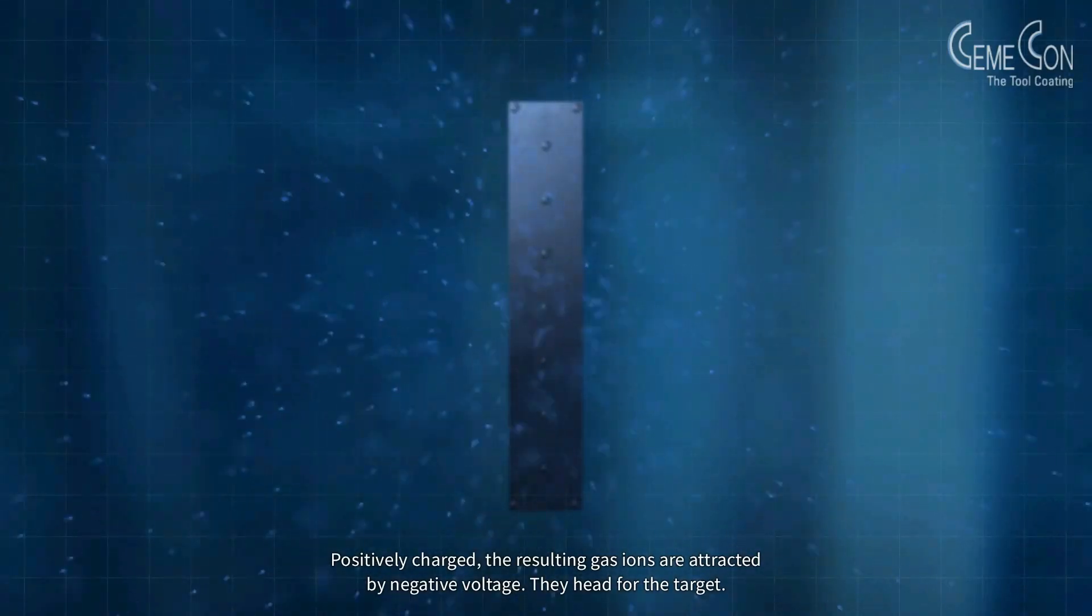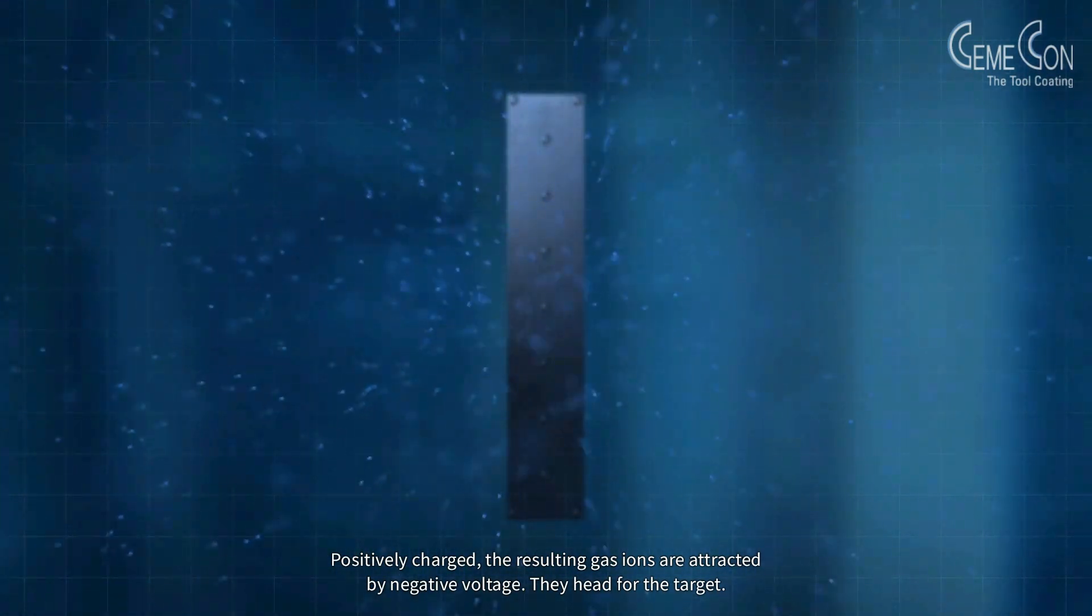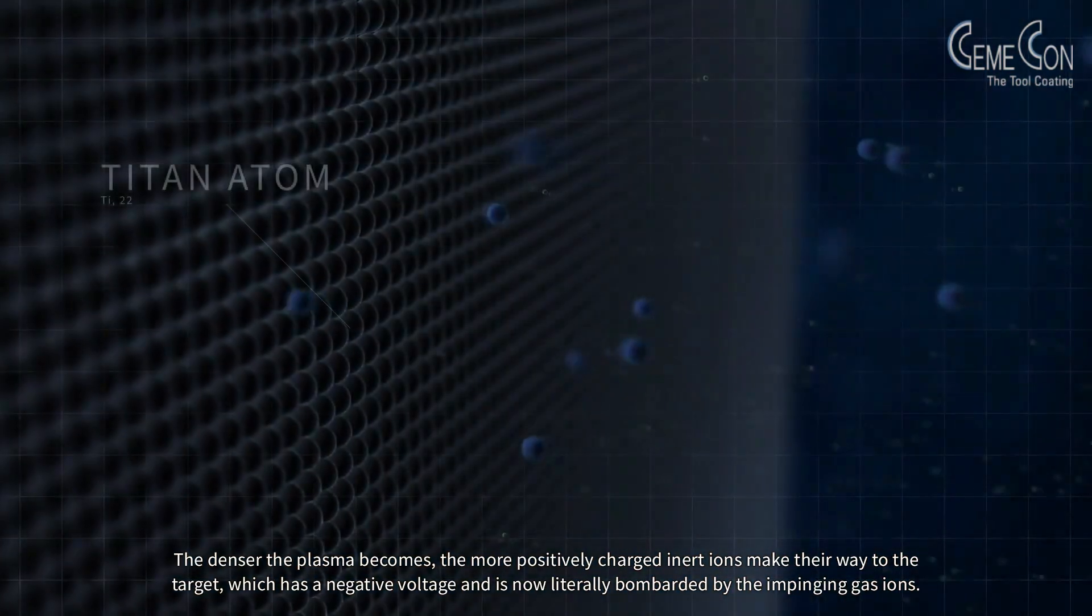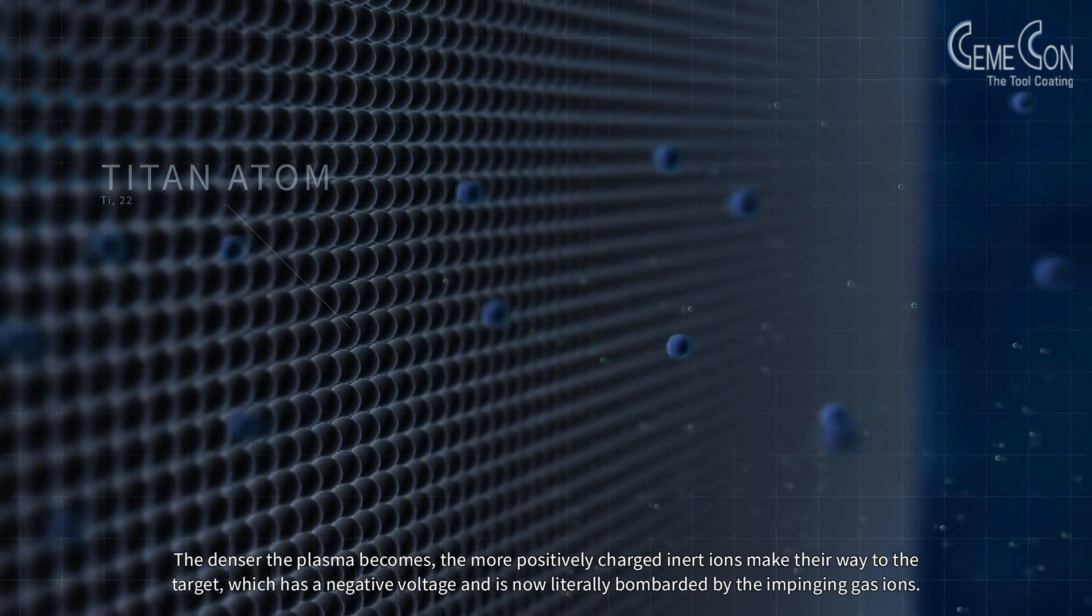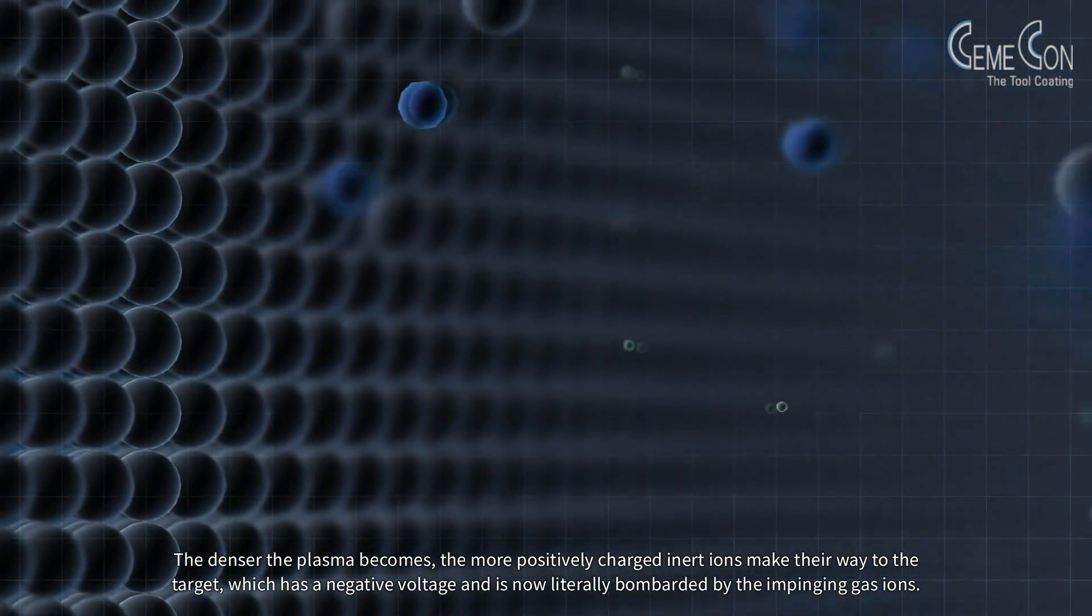Positively charged, the resulting gas ions are attracted by negative voltage. They head for the target. The denser the plasma becomes, the more positively charged inert ions make their way to the target, which has a negative voltage, and is now literally bombarded by the impinging gas ions.